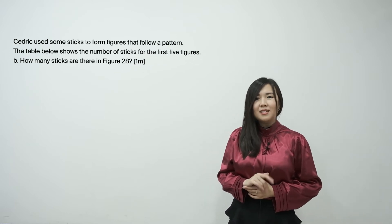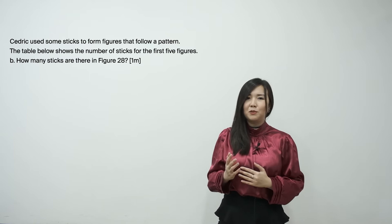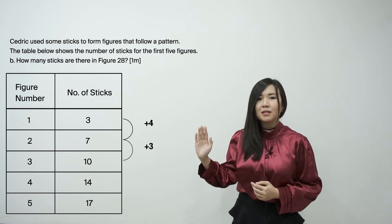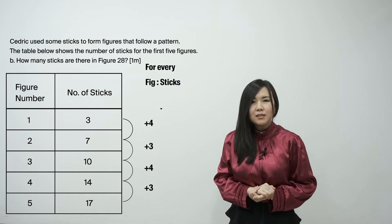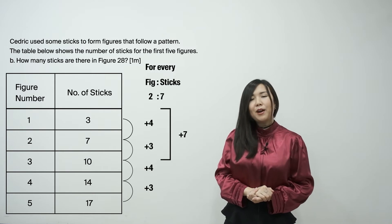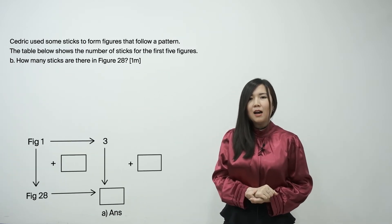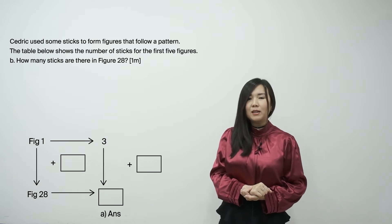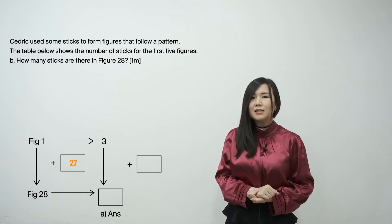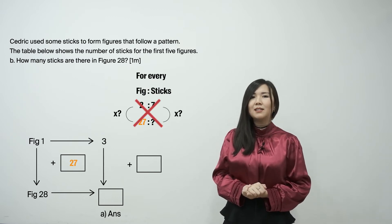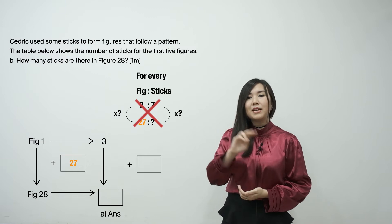We will be applying the same technique to part B. Again, since this question is a constant difference at alternate intervals question type, it follows this pattern of plus 4, plus 3, plus 4, plus 3 — which means that for every two more figures, the number of sticks increases by 7. Let's try using figure 1 as base. How many more figures to figure 28? 28 minus 1 equals 27 — we need 27 more figures. Now, is 27 a multiple of 2? No, right? So let's try using figure 2 as base instead.